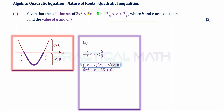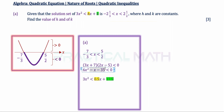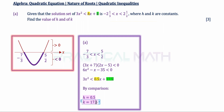Expanding and simplifying, we get 6x squared minus x minus 35 less than 0. The coefficient of x squared is 6, but in our given inequality it is 3, so we divide throughout by 2. Dividing by 2 gives 3x squared, and shifting the remaining terms: coefficient of x becomes 0.5 and the constant becomes 17.5. By direct comparison, h equals 0.5 and k equals 17.5.